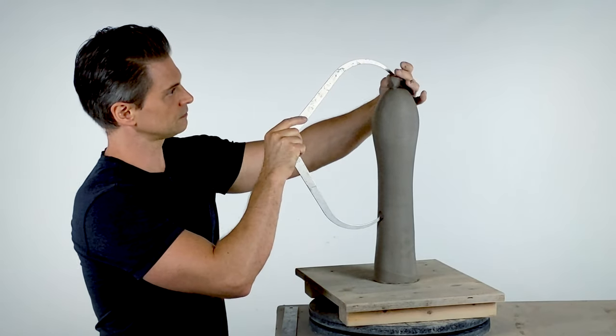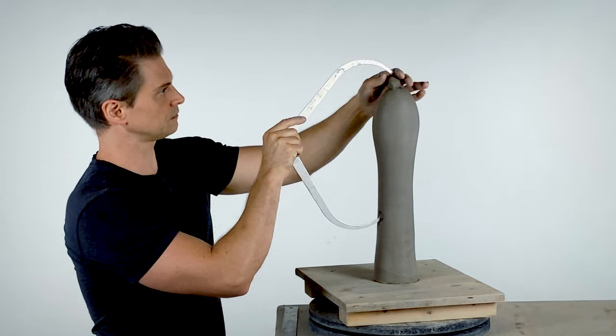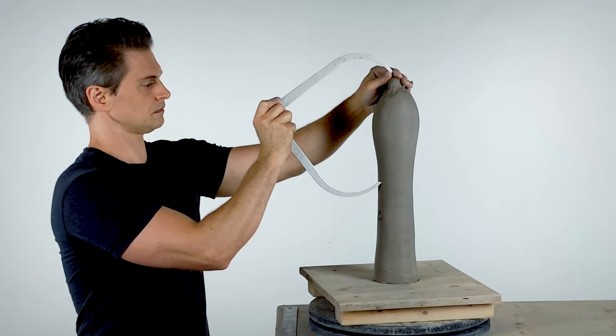Measure from the suprasternal notch up to the crown and add a lug of clay to mark the total height. Measure down from the crown and mark the chin height.